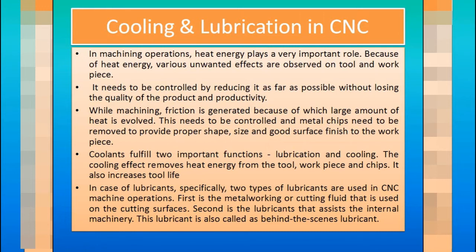Agar hum baat karein lubricants ki, toh do type ke lubricants use karte hain CNC machine mein. Two types of lubricants are used in CNC machine operation. First is metal working or cutting fluid, jisko hum bolte hain cutting fluid - jo aapka lubricant that is used on the cutting surfaces. Woh kahan use karenge? Jahan pe aapka cutting ho rahi hai, uske surface pe use karenge. Second lubricant jo hota hai, that accesses the internal machinery - jo internal machinery mein daala jata hai, uske liye hota hai. This lubricant is also called as behind-the-scene lubricant - jo machine ko properly chalane ke liye, jaise hum bolte hain ki machine ki oiling karni zaruri hai.